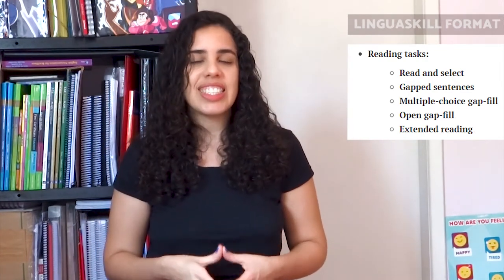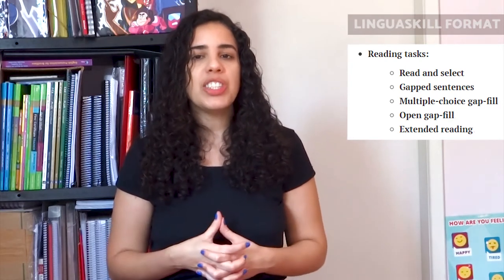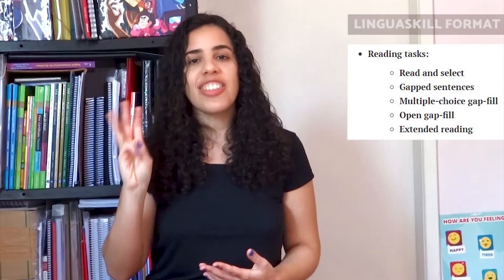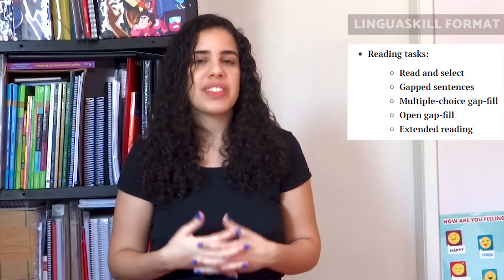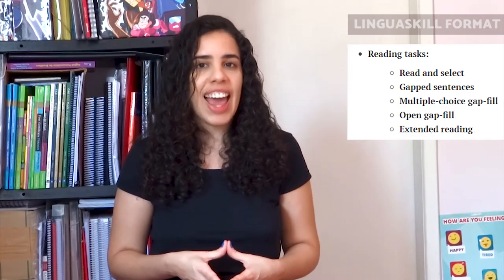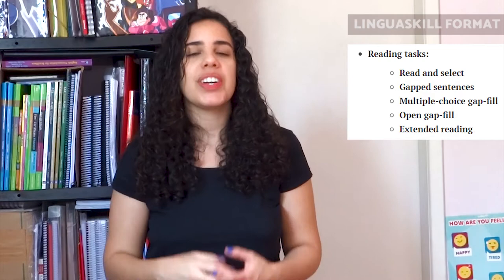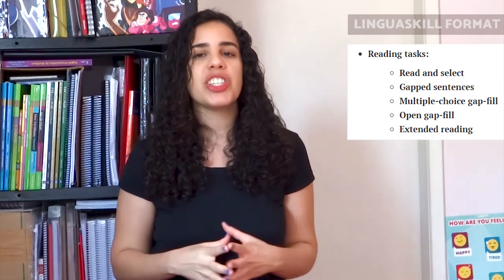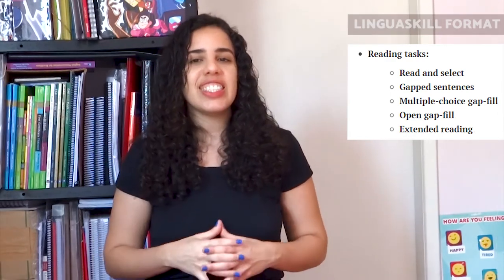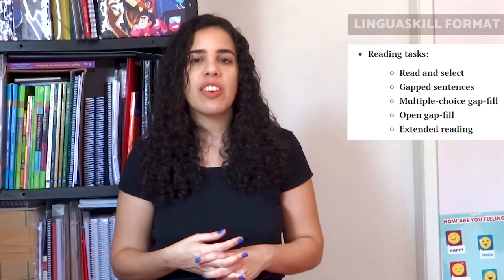The second type is gapped sentences — candidates read a sentence with a missing word and choose the correct word to fill in the gap, with three or four choices. Third, multiple choice gap fill, where candidates choose the right word or phrase to fill the gaps in a text, with three to four choices for each gap. Fourth, open gap fill — candidates read a short text with missing words and write the missing word in each gap. Fifth, extended reading — candidates read a longer text and answer a series of multiple choice questions, in the same order as the information in the text.